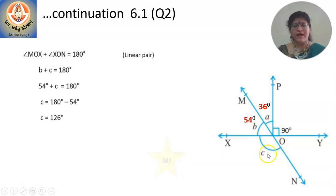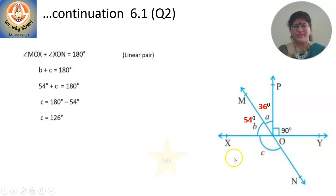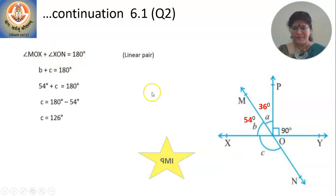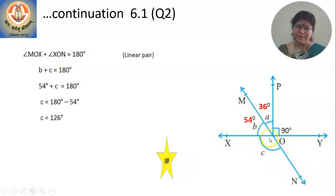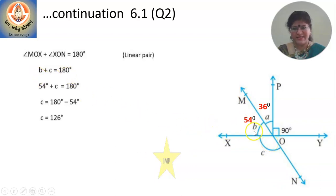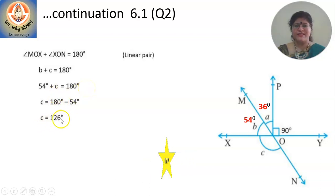Now how do you find the value of C? There are different methods — feel free to use any. Using angles in a linear pair: angle MOX plus angle XON equal to 180 degrees. Since B is 54 degrees, we get 54 plus C equal to 180, so C equals 126 degrees.